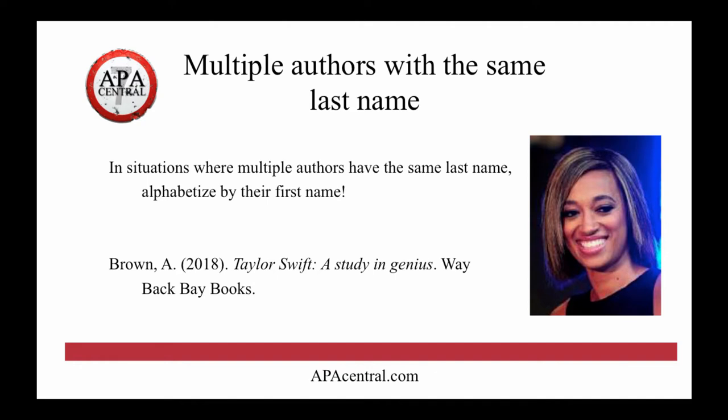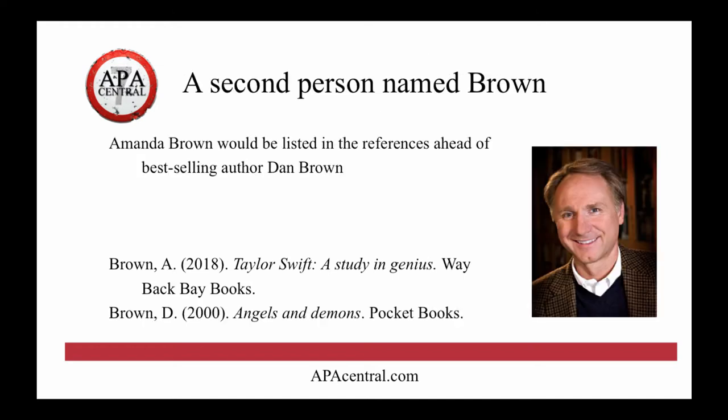What about multiple authors with the same last name? We alphabetize them by their first name. So that is Amanda Brown, who you may or may not know from season three of The Voice. This is a fictitious book that maybe she would write about Taylor Swift, 'A Study in Genius' by Wayback Bay Books. She would be listed in the references ahead of bestselling author Dan Brown, because the A in Amanda comes before the D in Dan. Even though the T in Taylor comes after the A in Angels, we do the alphabetization by the author's first name.